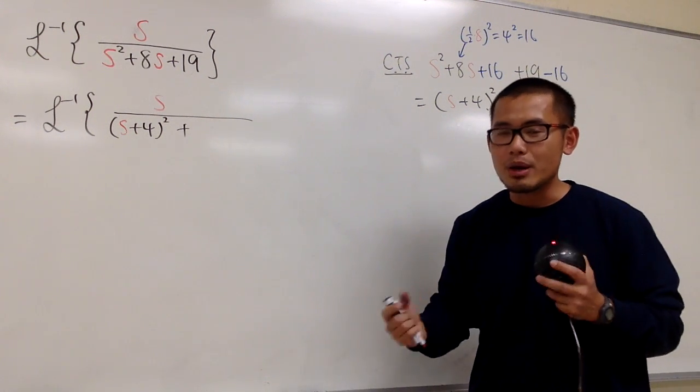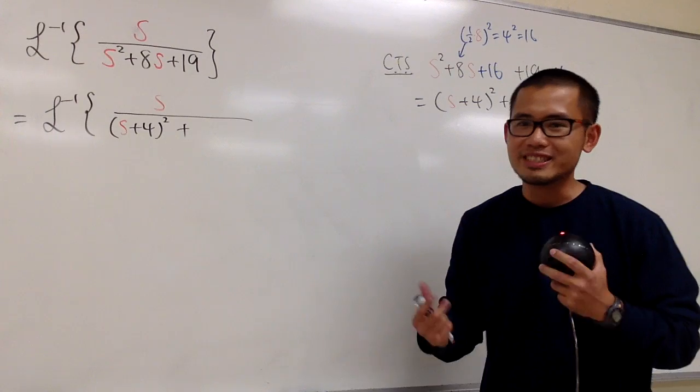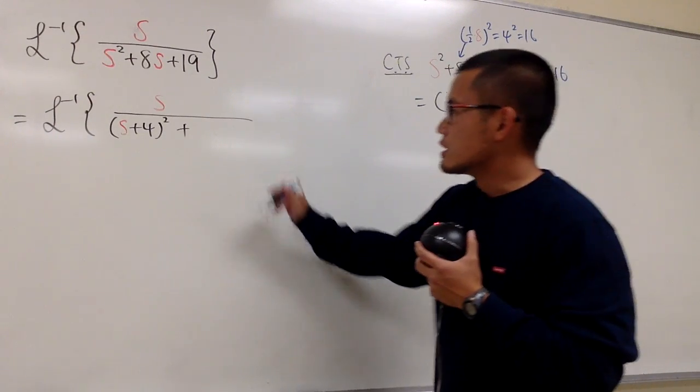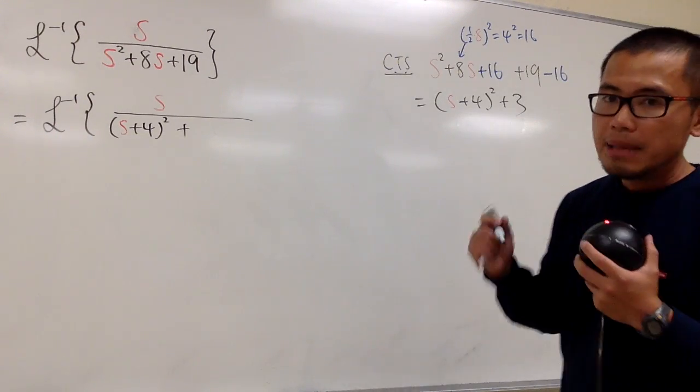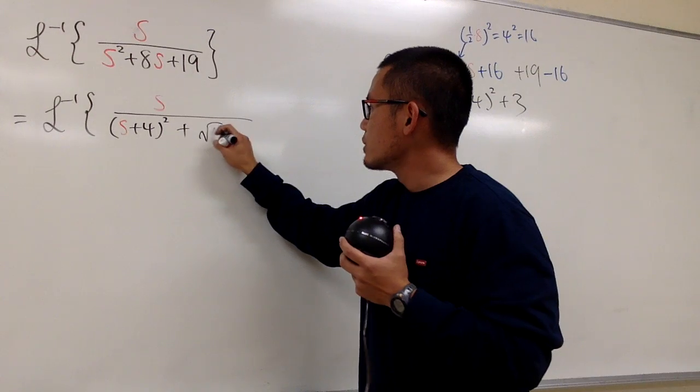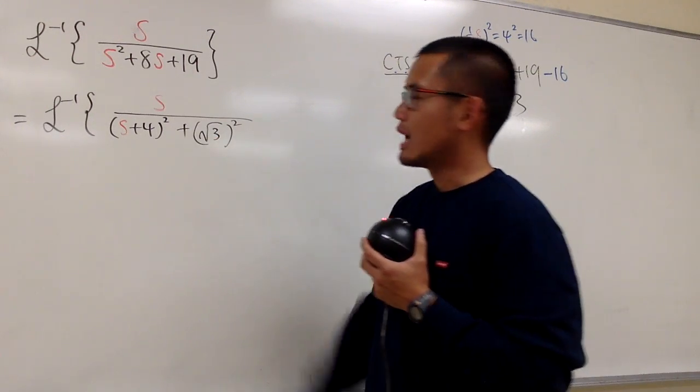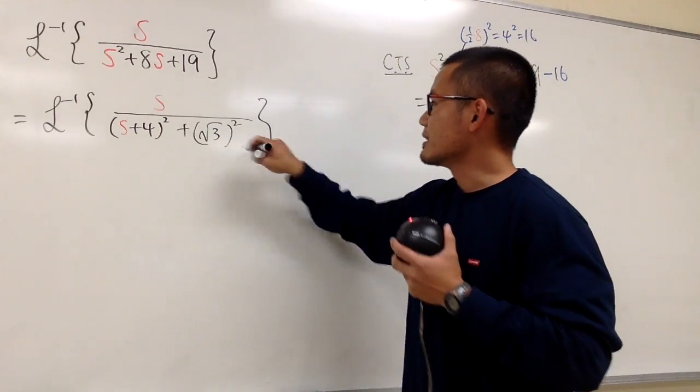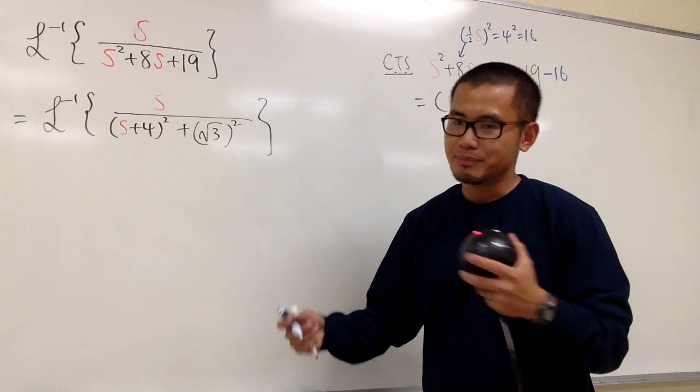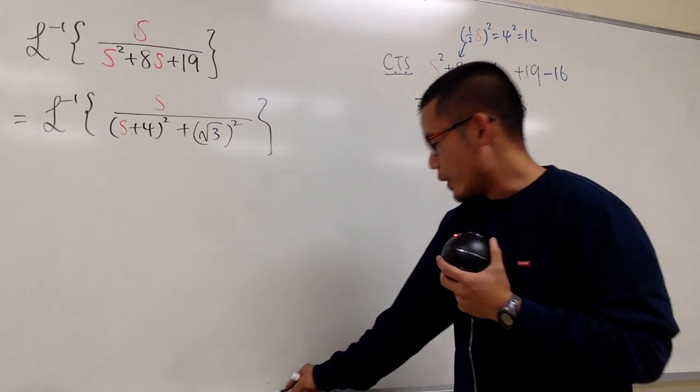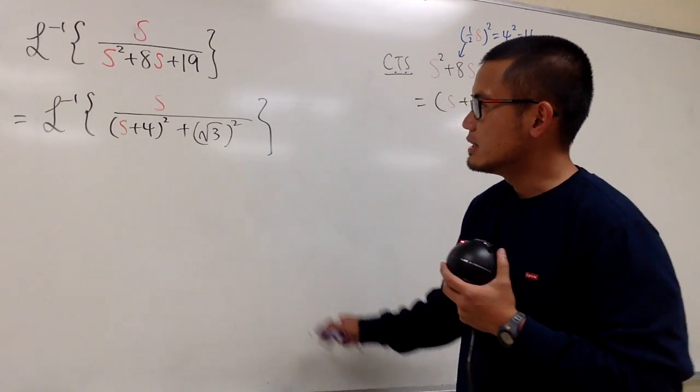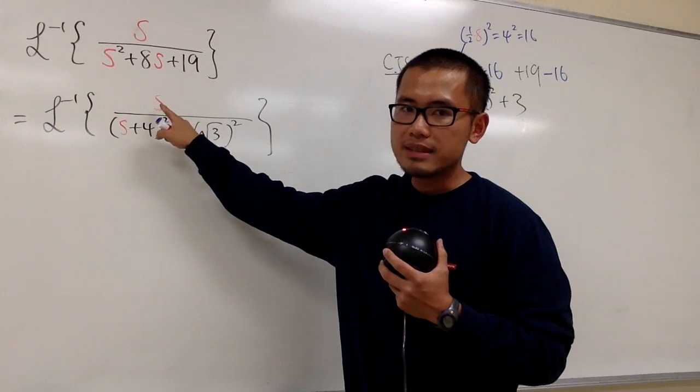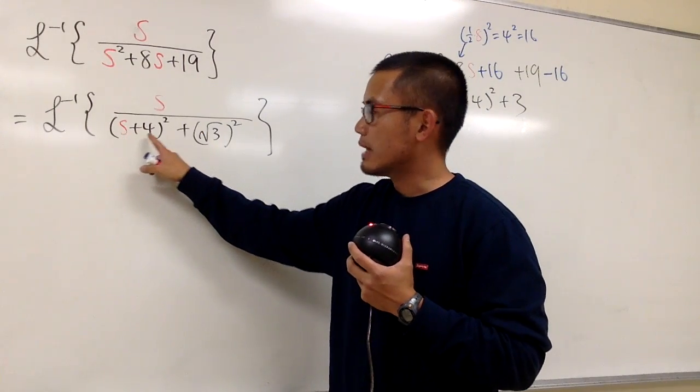Even though 3 is not a perfect square, you know the deal, we have to force it so that it looks like a perfect square. So for this 3, let me put it down as square root of 3 squared. This would be nice. And now, what can we do next? As you can see, on the top I only have s, but here I have s plus 4. And you know we have to match this and that.